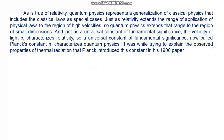Just as relativity extends the range of application of physical laws to the region of higher velocities, so quantum physics extends that range to the region of small dimensions. And just as the universal constant of fundamental significance — the velocity of light C — characterizes relativity, so a universal constant of fundamental significance, now called Planck's constant H, characterizes quantum physics. It was while trying to explain the observed properties of thermal radiation that Planck introduced this constant in his 1900 paper.